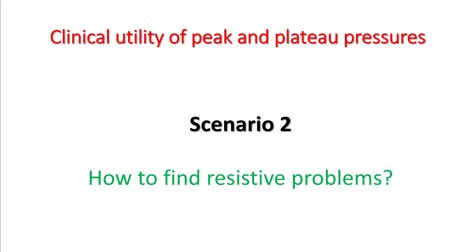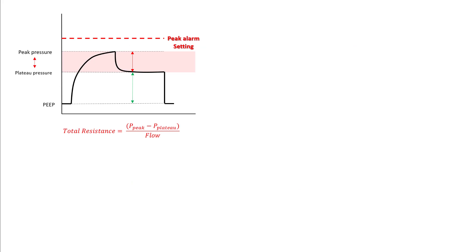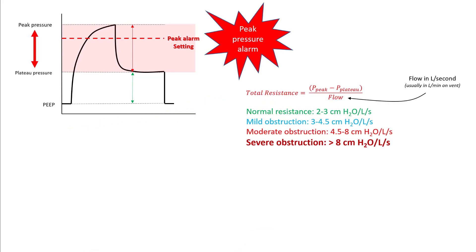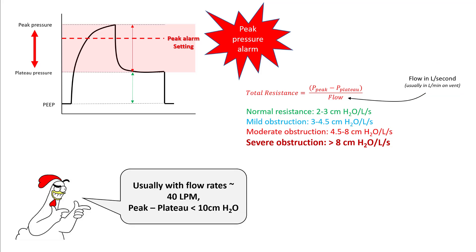To identify resistive problems, look at the normal inspiratory pause waveform showing peak pressure and plateau pressure. Total resistance is calculated as: (peak − plateau) divided by flow. If peak minus plateau is increasing, your total resistance in the circuit is increasing. Normal resistance is around 2 to 3 cmH₂O at typical flow rates. Note that the flow in this formula is in liters per second, not liters per minute as usually displayed on the ventilator. At a flow rate of around 40 L/min, peak minus plateau less than 10 is considered normal.